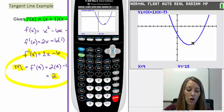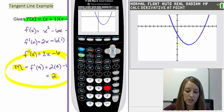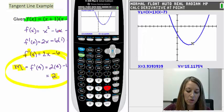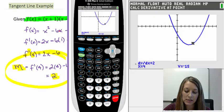If you want to double check your slope, you do second, calculate, use option 6 dy/dx for the derivative, and again you type in your x value, which was 4, and hit enter. And notice our dy/dx = 2, so that is correct.